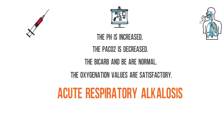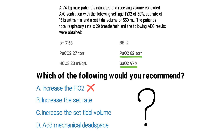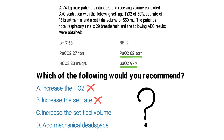Since the PaO2 and SaO2 values are normal, you do not need to make any adjustments to the FiO2 setting. Looking at the patient's spontaneous breathing rate, it's already way too fast, so you definitely do not need to increase the rate. That rules out A and B automatically. Next we'll look at C, which says to increase the set tidal volume.